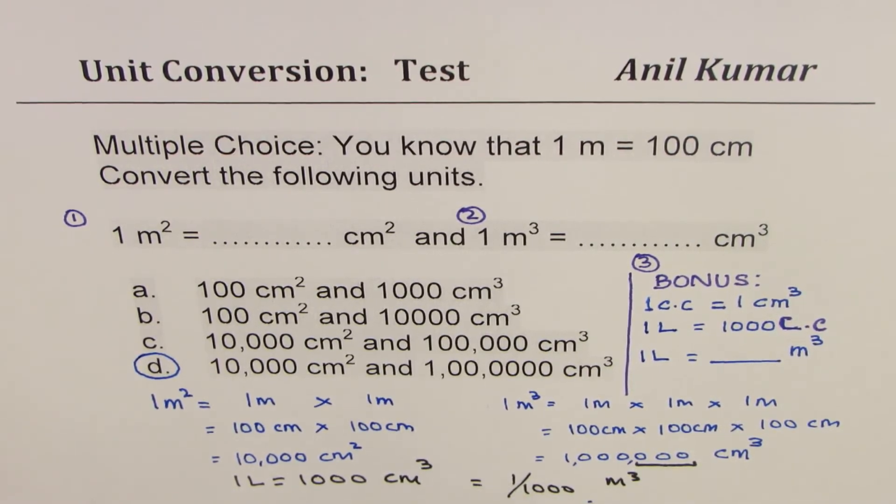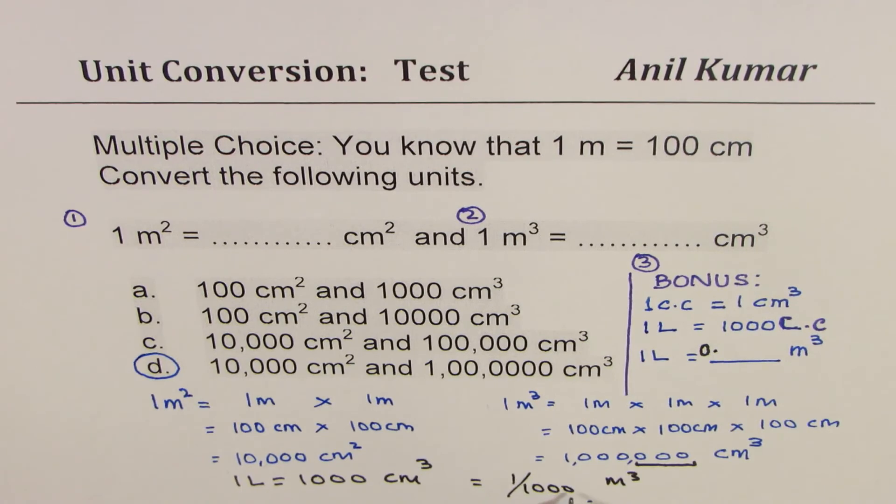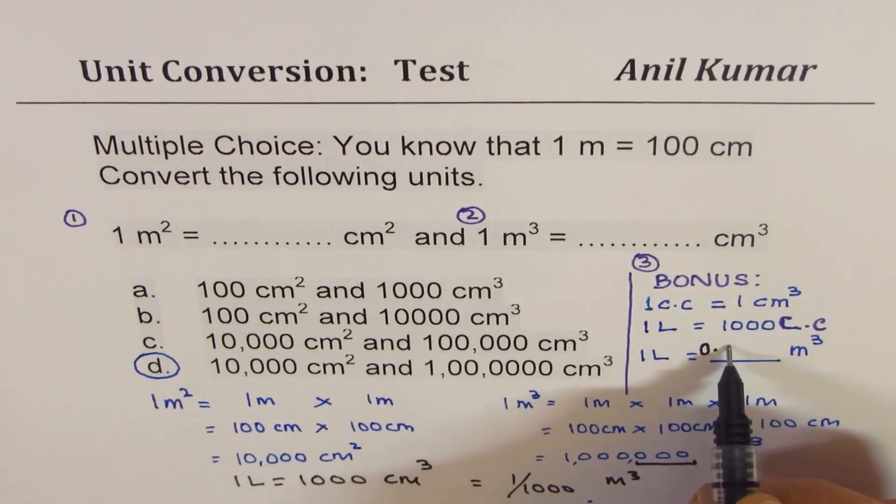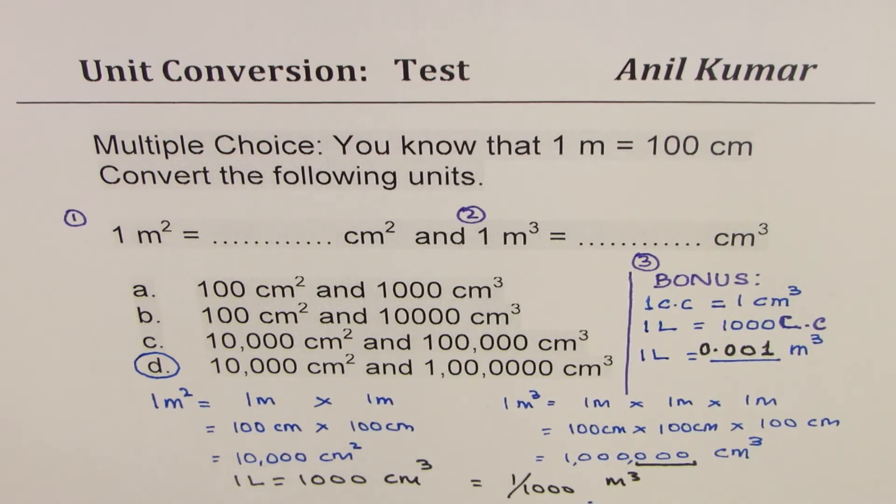One thousand centimeter cube is one thousandth of a meter cube. So that becomes your answer. When you divide one by one thousand - if you divide by 10, you get 0.1; by 100, you get 0.01; by 1000, you get 0.001 meter cube. That is the answer for converting a liter to meter cube.